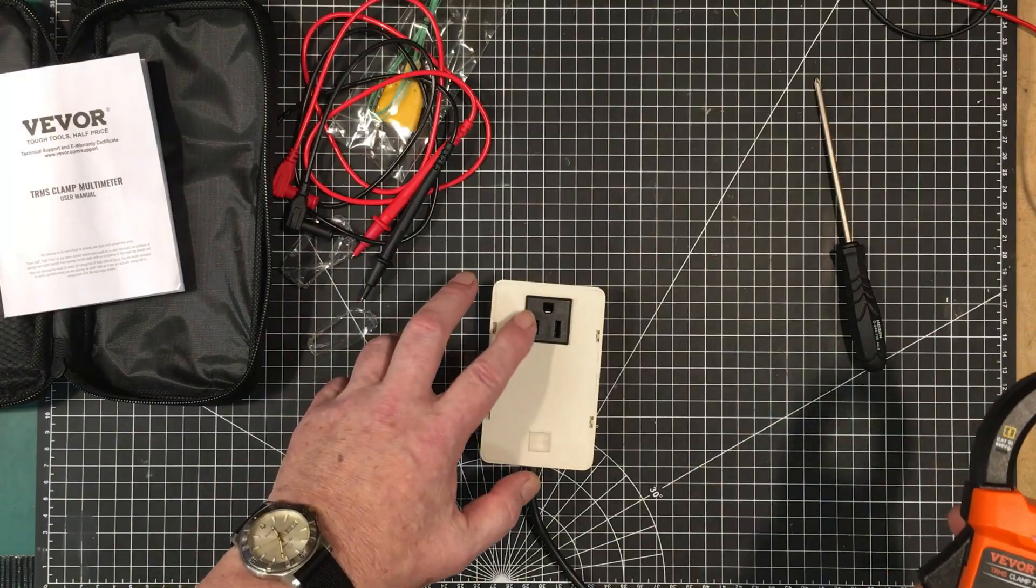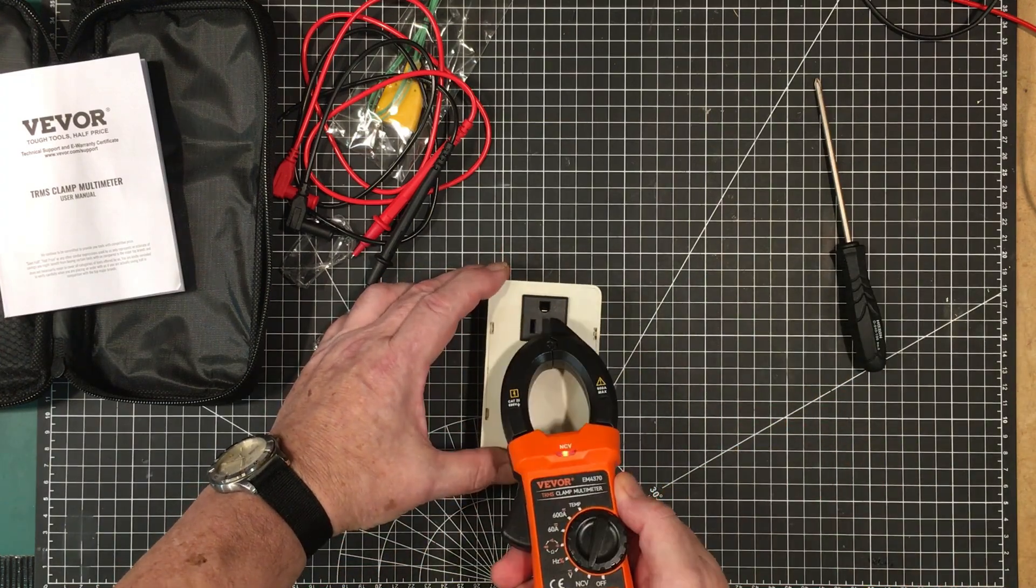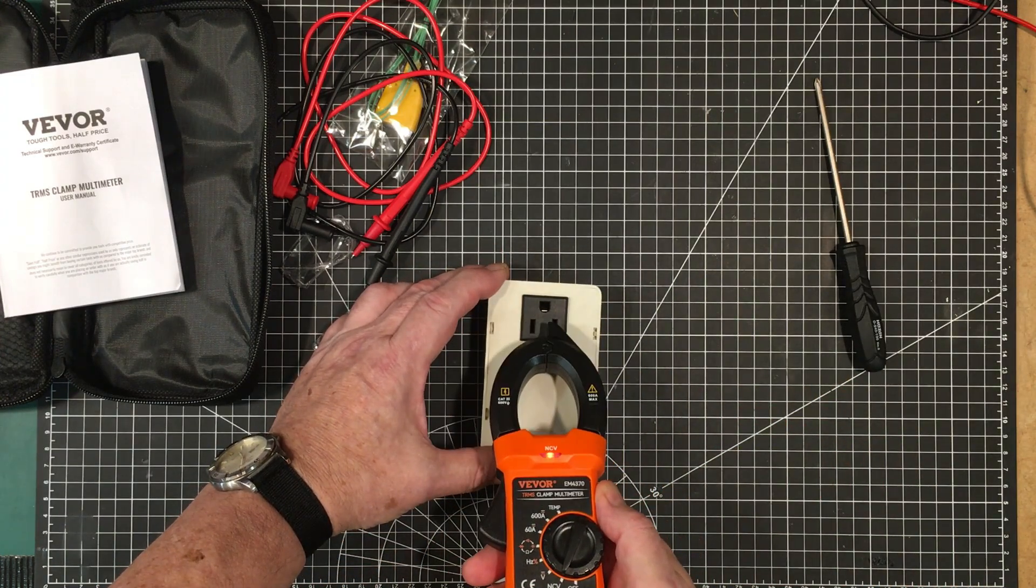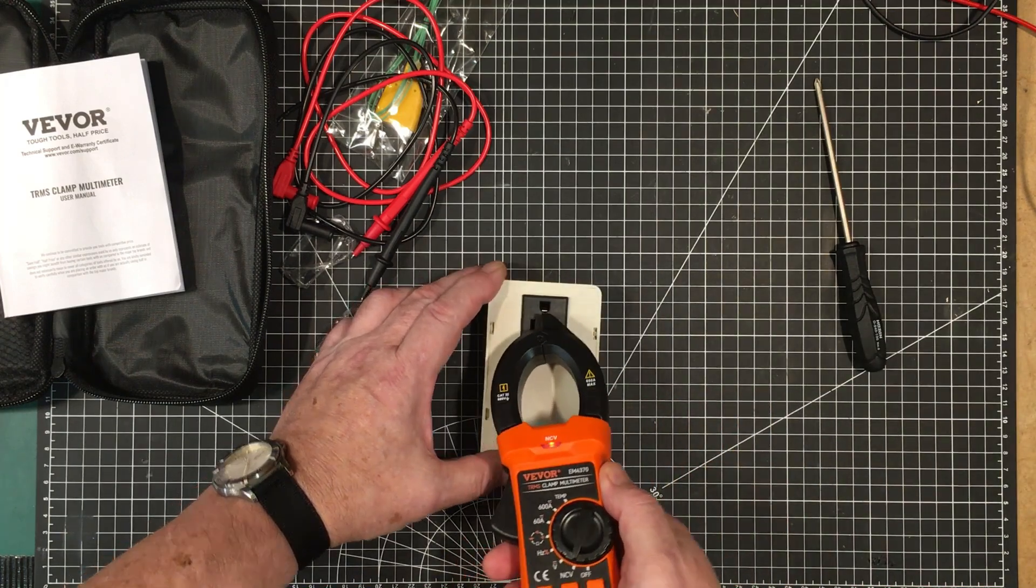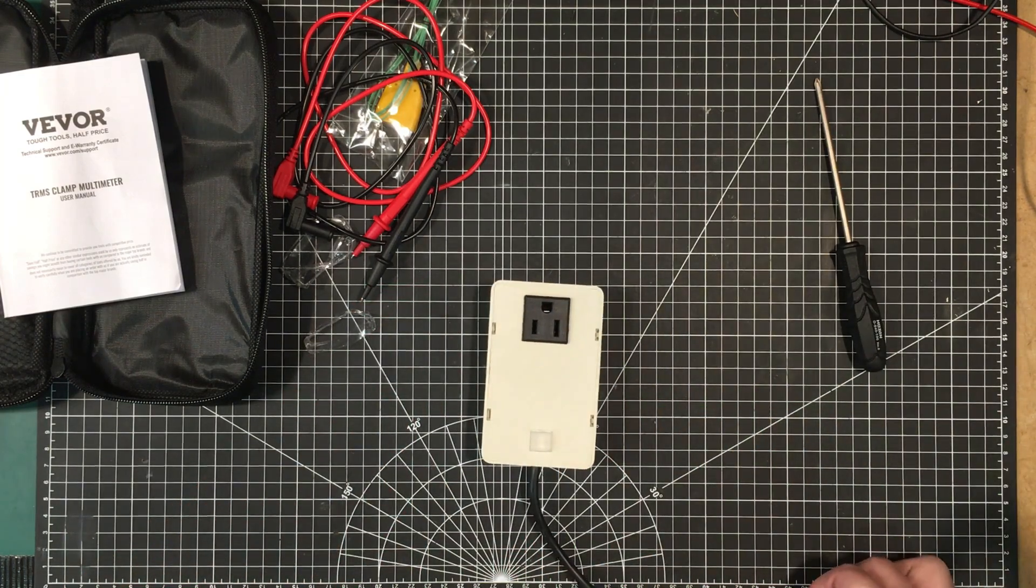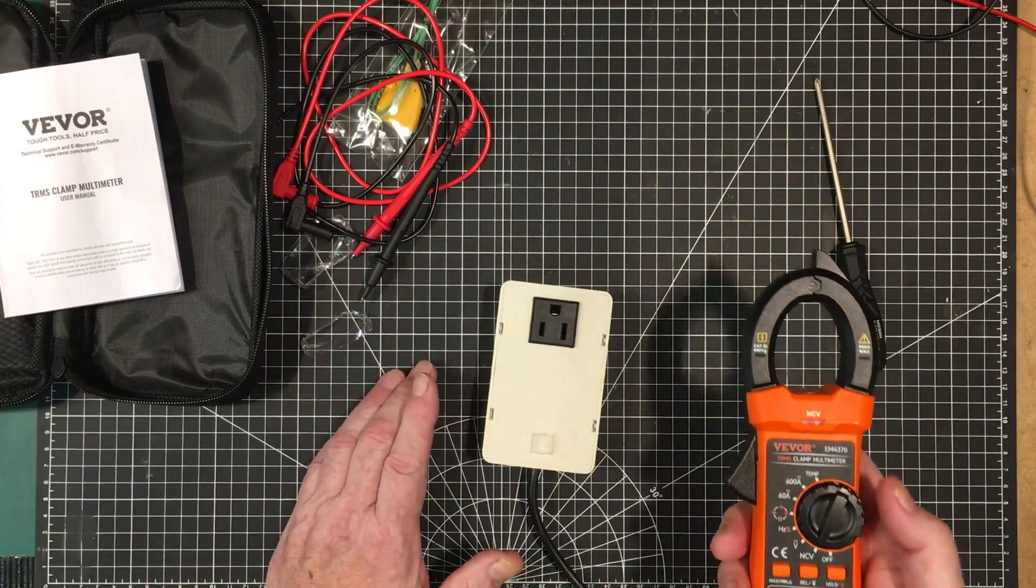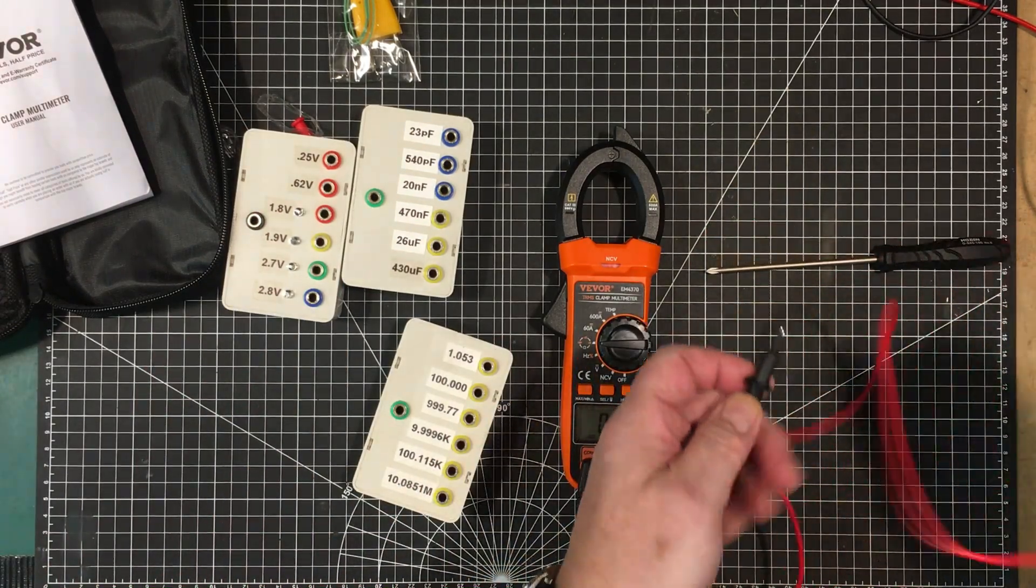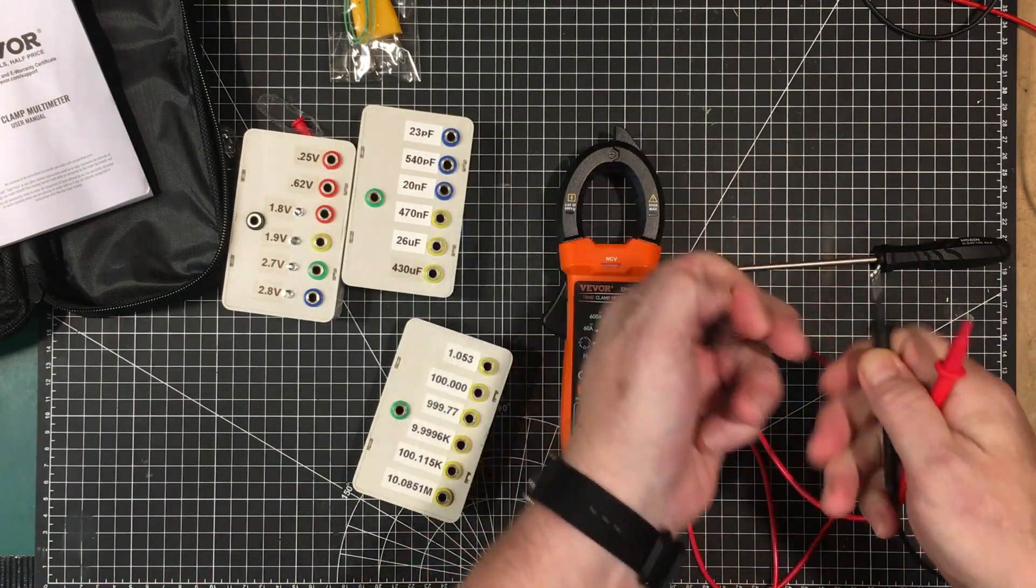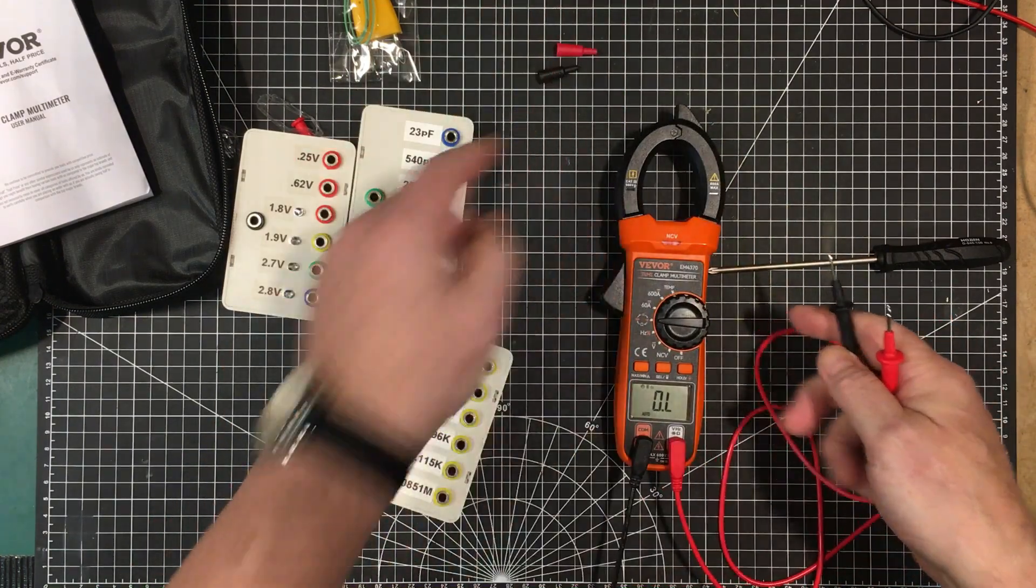I've got this single outlet extension here. Let's see if this NCV mode works. It seems to be very effective for telling if there's voltage there or not. Let me shut the switch off. Yeah, it's working pretty good. Nice and sensitive. We got it in resistance mode here. So let's start off with that. I'm going to take these sleeves off to expose more of the tip.